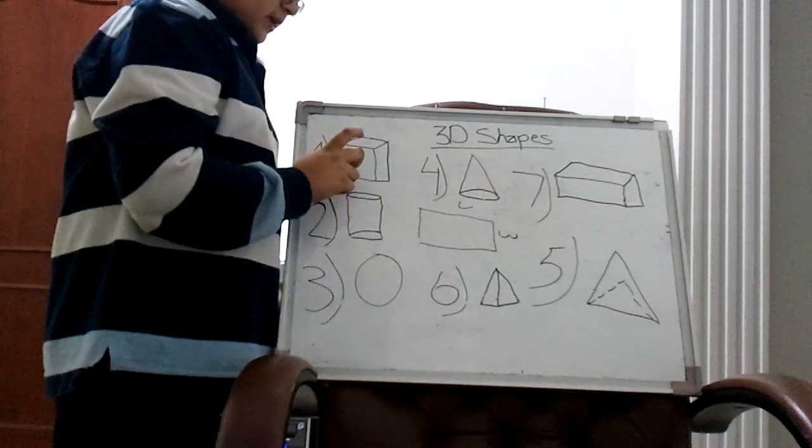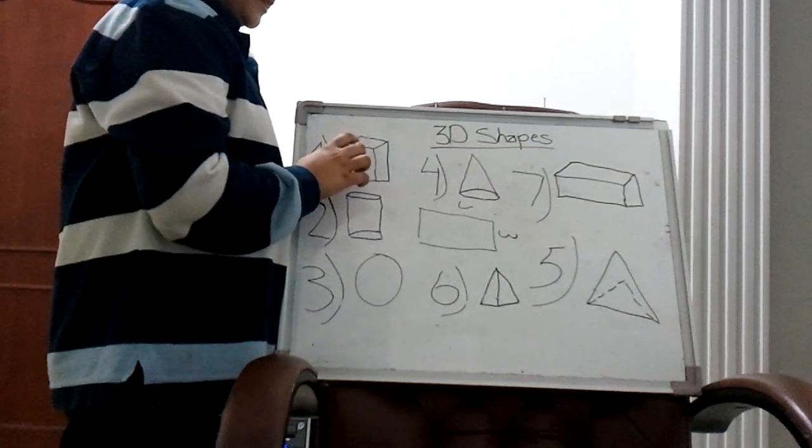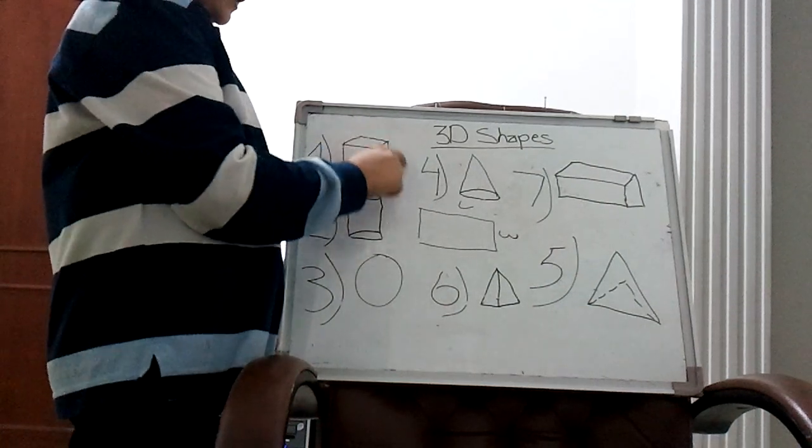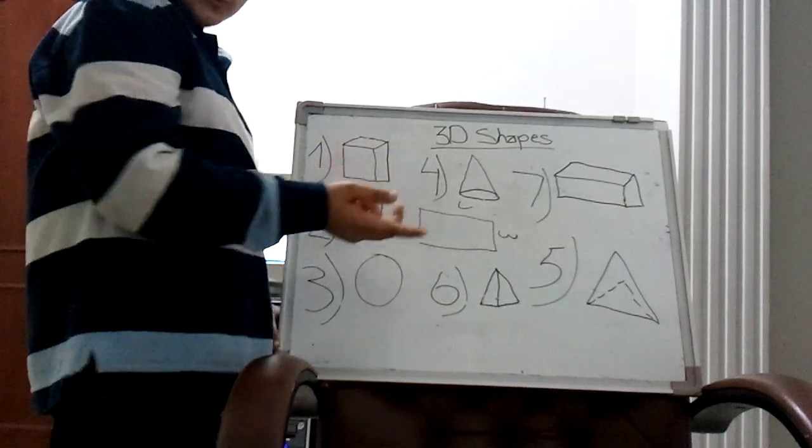Eight vertices and twelve edges. So I will be only giving you details about the cube. If you want to see all of the faces, edges, and vertices about all of the shapes, you need to go to the description down below.